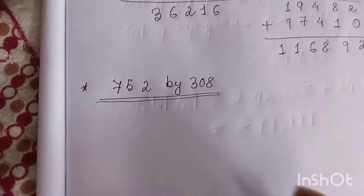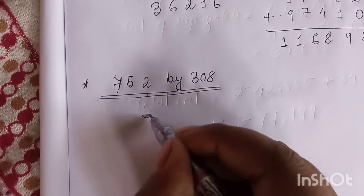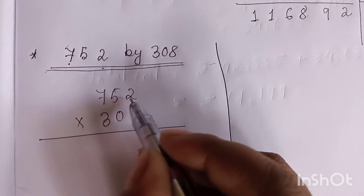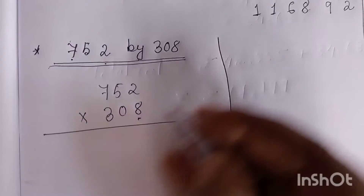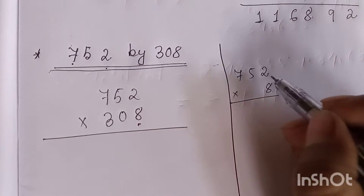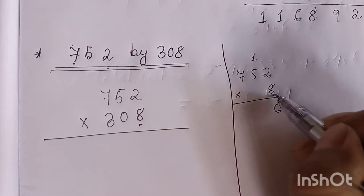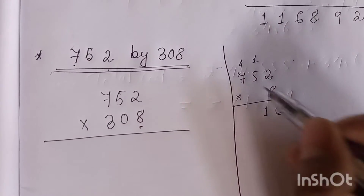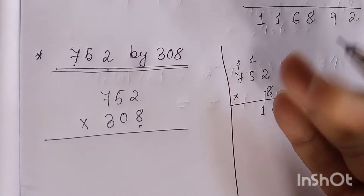Now we are going to learn multiplication of a three-digit number by a three-digit number — same process. In the ones place we have eight, so first multiply this number by eight. Eight twos are sixteen — carry one. Eight fives are forty, plus one, forty-one. Eight sevens are fifty-six, plus one, fifty-seven to sixty.